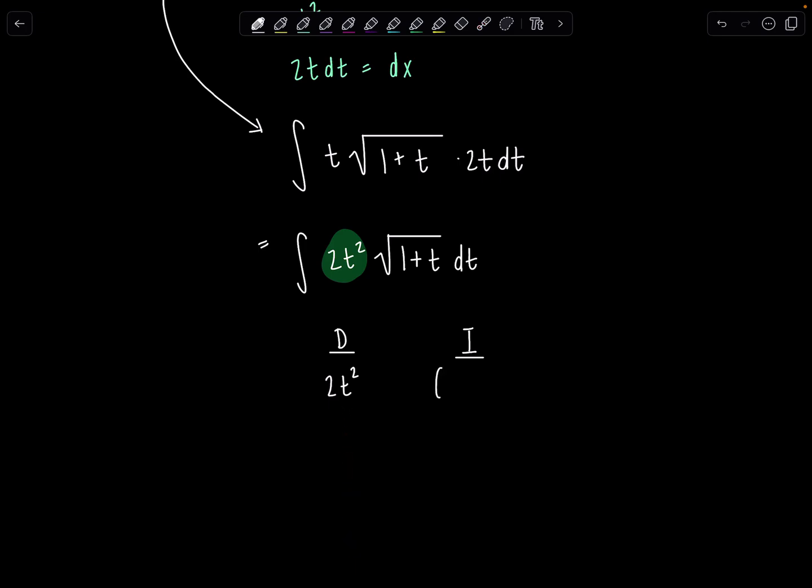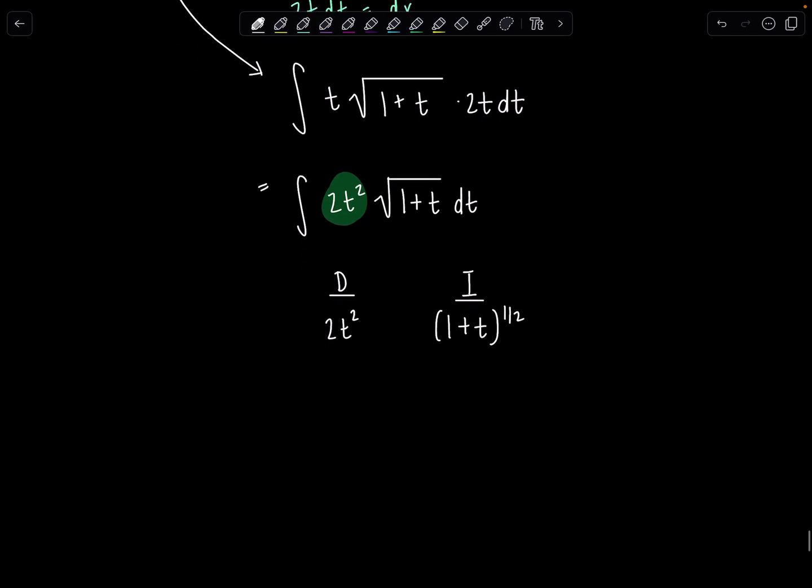There's some circumstances where this column doesn't have to eventually become 0, and I show it in the video lecture on tabular and it will still work. And then the other column I'm going to have 1 plus t to the 1 half power. Okay, so start differentiating until you get 0. So derivative of 2t squared is 4t. Derivative of 4t is 4, and then derivative is 0.